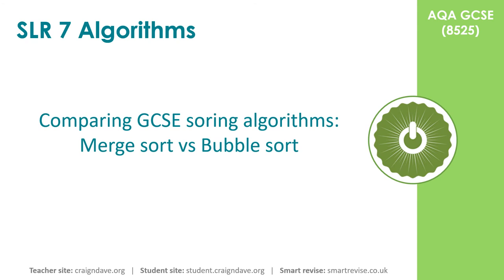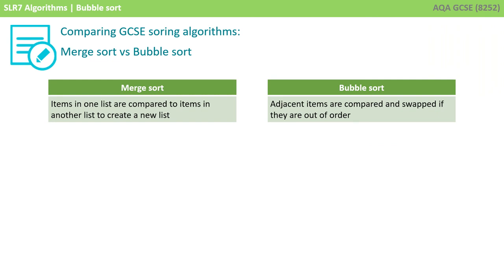In the rest of this video, we're going to compare the two GCSE sorting algorithms that you need to know about: the merge sort and the bubble sort. If you've not watched the video on the merge sort yet, go back and watch that first. On the left hand side, we have the merge sort and on the right, the bubble sort. With a merge sort, items in one list are compared to items in another list to create new lists. With a bubble sort, adjacent items are compared and swapped if they're out of order. A merge sort is typically a very quick sort algorithm, whereas the bubble sort is typically quite slow.